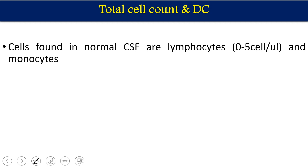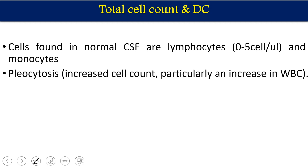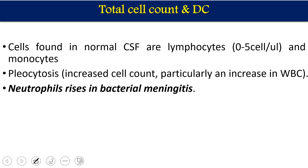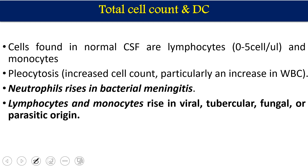Total cell count and differential counts: cells found in normal CSF are lymphocytic cells, roughly 0–5 cells per cubic mm, or monocytes. Pleocytosis is the increased cell count in CSF, particularly increased WBC count. Neutrophils rise only in case of bacterial meningitis as an immunological response. Lymphocytes and monocytes rise in case of viral, tubercular, fungal, or parasitic meningitis.